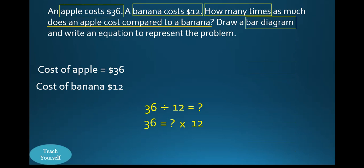Let's look at that. It says we should draw a bar diagram. So we have the cost of the apple as 36, and we know that the banana costs 12. We want to find out how many times are we going to have this 12 to make up 36. So we have the second unknown and the third unknown. As we can see, it is 3. So that means 36 divided by 12 gives us 3.